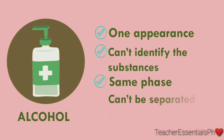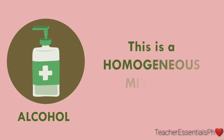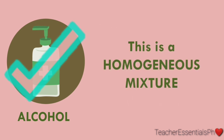Can it not be separated easily? Yes, we cannot separate alcohol by picking, decantation, or sieving. It can be separated by using other methods that are not easy to do. All characteristics of a homogeneous mixture are found in alcohol. Therefore, this is a homogeneous mixture.